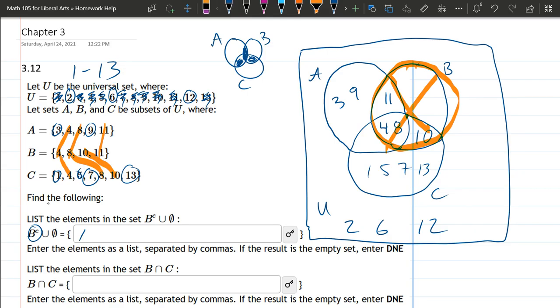So we want every number that's not 4, 8, 10, and 11. So again, I'm thinking about 1 through 13 in U. So if we don't want 4, 8, 10, and 11: 1, 2, 3, skip 4, 5, 6, 7, skip 8, 9, skip 10, skip 11, 12, 13. Alright, so that's every number that's not in the B set.